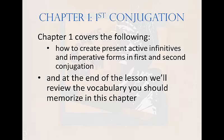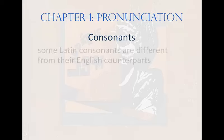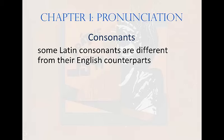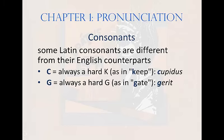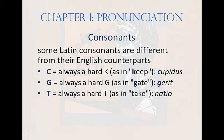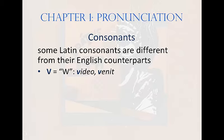Latin Pronunciation: Consonants. Most Latin consonants are pronounced the same way as in English, but a few are different. C is always a hard K sound, like in 'keep' — for example, 'cupidus.' G is also always hard, as in 'gate' — for instance, 'garret.' T is always hard also, as in 'take' — for instance, 'natio.' The Latin consonant that will probably seem most different to you is V, which is pronounced like our W, as in 'video' or 'when it.' It will take some time to adjust to this pronunciation.